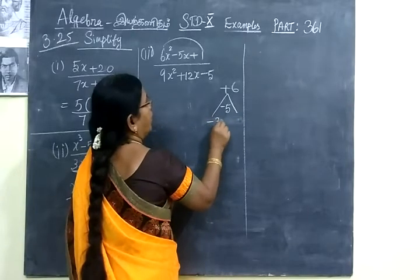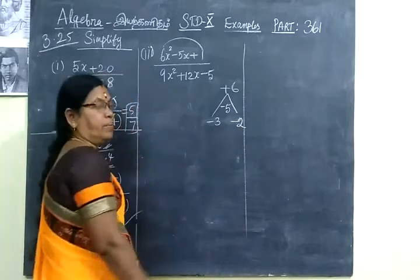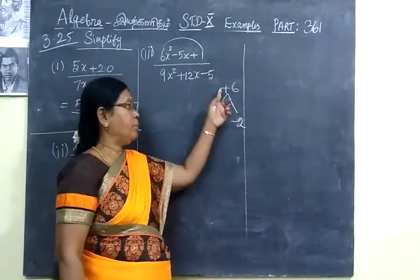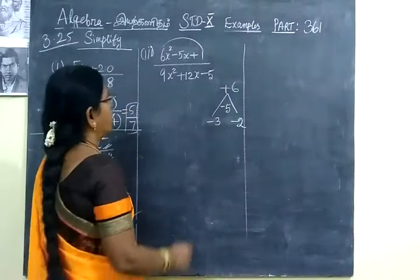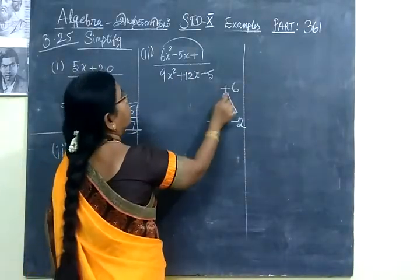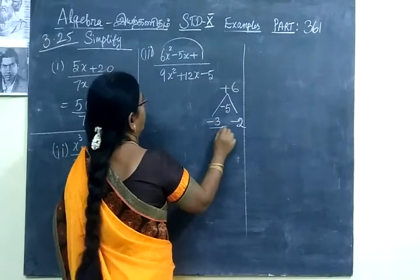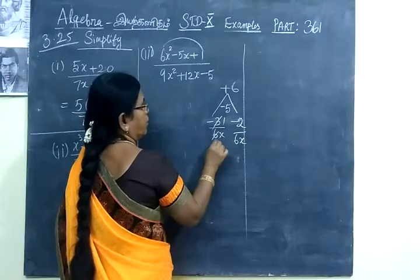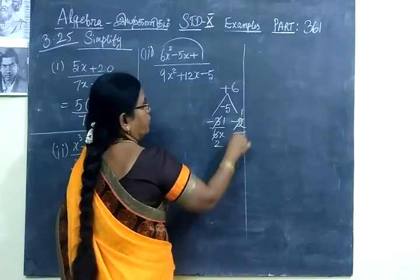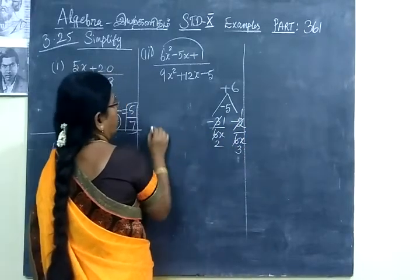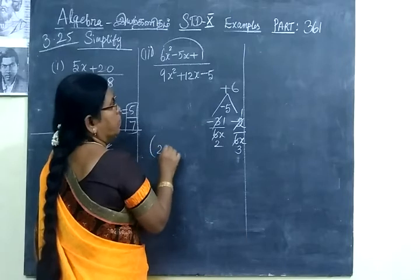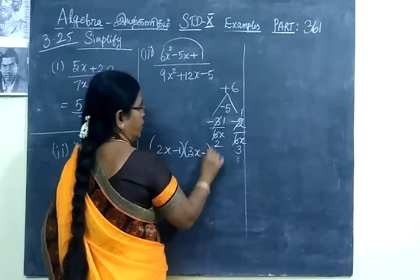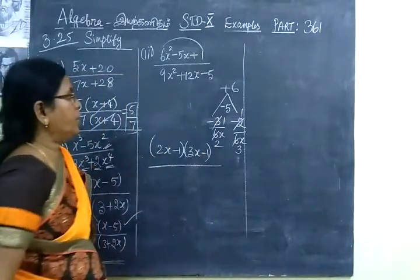So you take minus 3 minus 2. Minus 3 minus 2 means minus 5. If you multiply minus into minus plus, 3 times 2 is 6. So minus 5 then plus 6. So divide 6x. Here also 6x. So take 3 tables. Now 2 times 1 is 2x, then 3x. So the numerator can be written as 2x minus 1, then 3x minus 1, divided by.